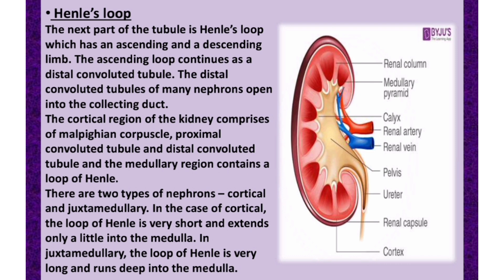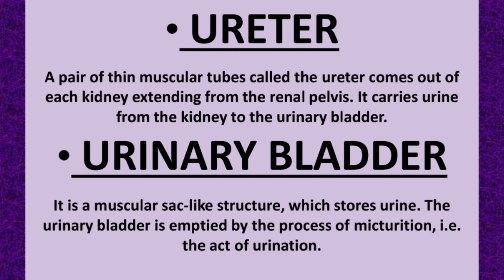A diagram of the kidney structure has been shared, showing the capsule, nephron, Henle's loop, and all the structures mentioned. Next is the ureter, which extends from the renal pelvis and carries urine from the kidney to the urinary bladder.